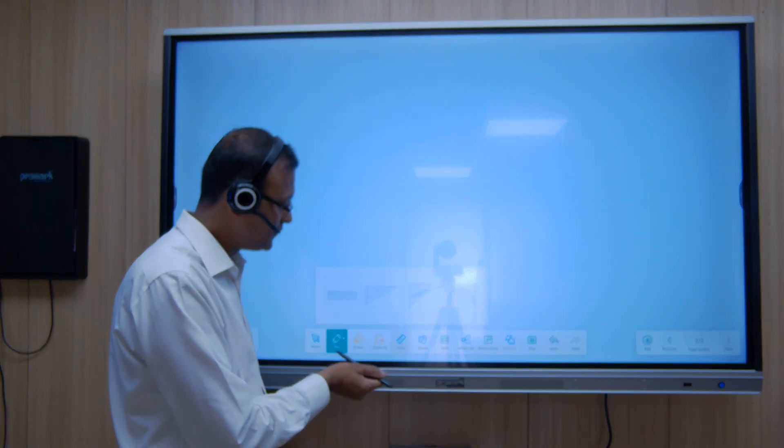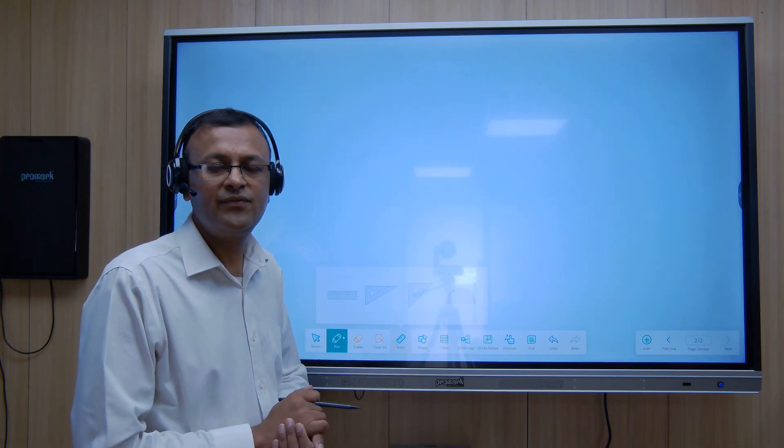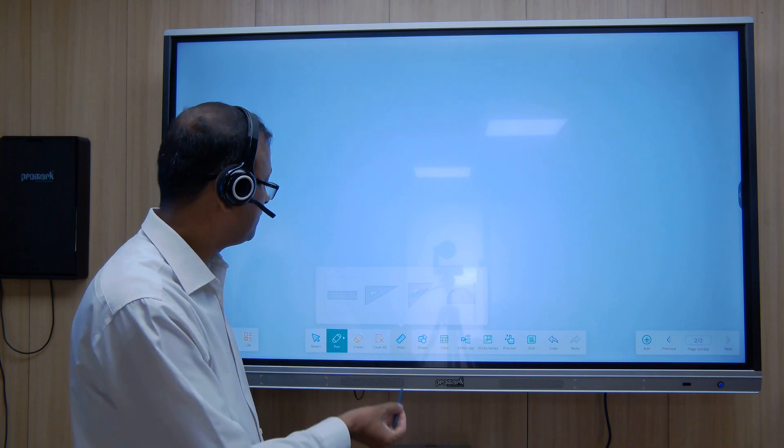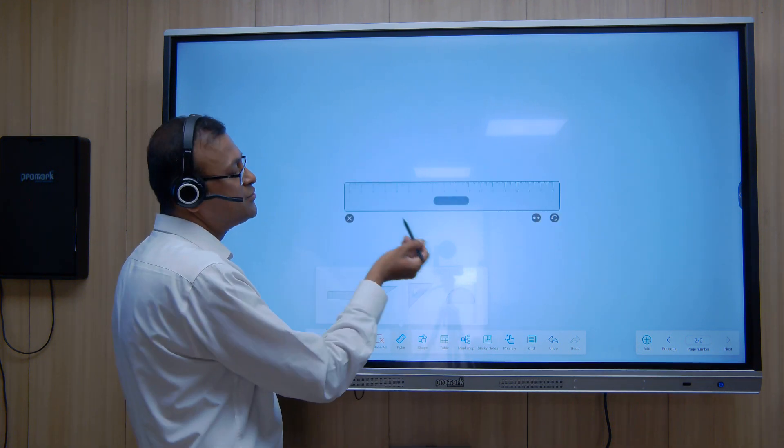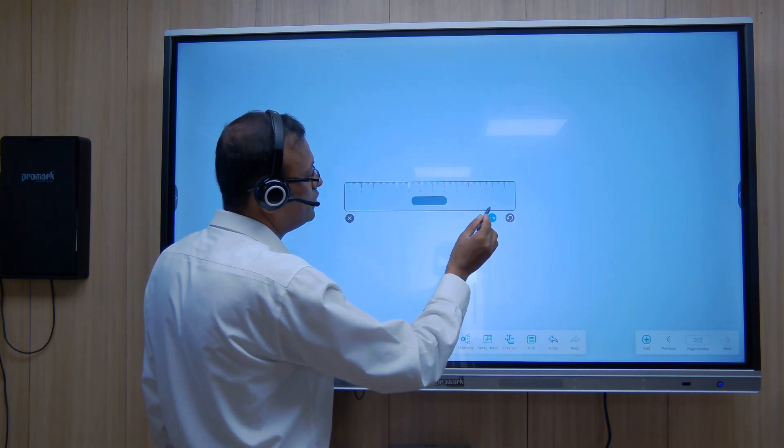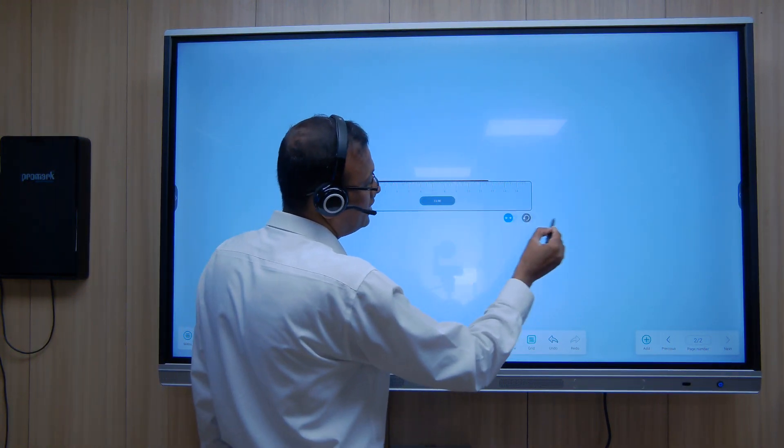And then we have another feature which is the ruler. We have these geometrical figures here which we can use for teaching in the class. The first one is the ruler. In this ruler you can see that we can decrease the size, increase the size of the ruler according to our requirement, and we can further extend it if need be.